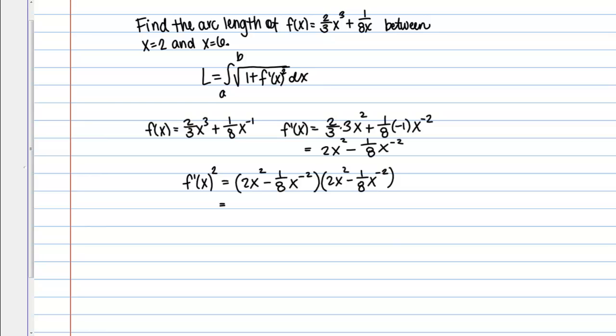If we work that out then, it looks like we get 4X to the fourth and then minus 1/4 X squared X to the negative 2 plus 1 over 64 X to the negative 4. X to the negative 2 times X to the negative 2 is X to the negative 4.